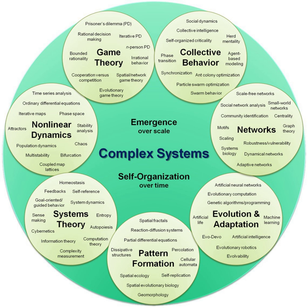A complex system is a system composed of many components which may interact with each other. Examples of complex systems are Earth's global climate, organisms, the human brain, infrastructure such as power grids, transportation or communication systems, social and economic organizations, an ecosystem, a living cell, and ultimately the entire universe.